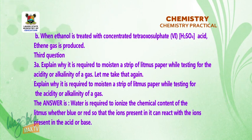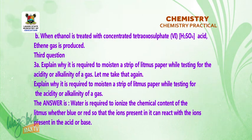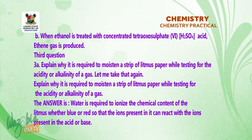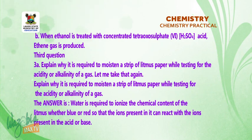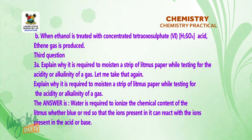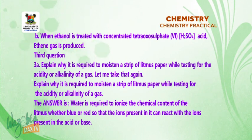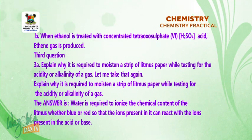Explain why it is required to moisten a strip of litmus paper while testing for the acidity or alkalinity of a gas. The answer is: water is required to ionize the chemical content of the litmus — whether blue or red — so that the ions present in it can react with the ions present in the acid or base.